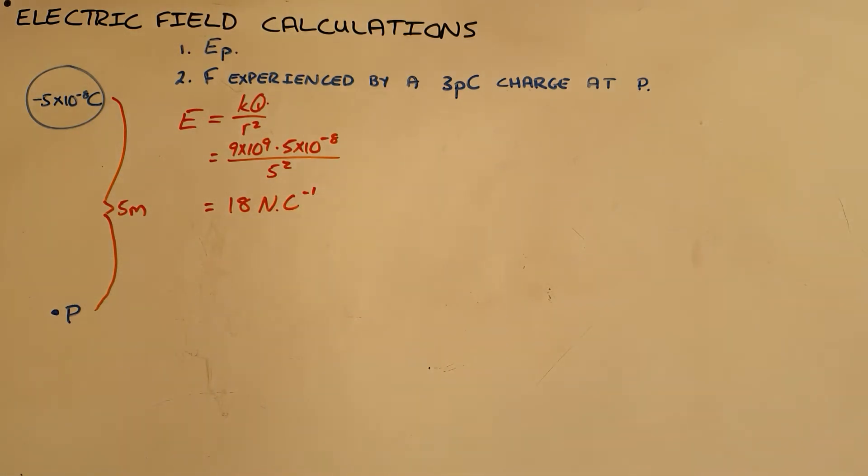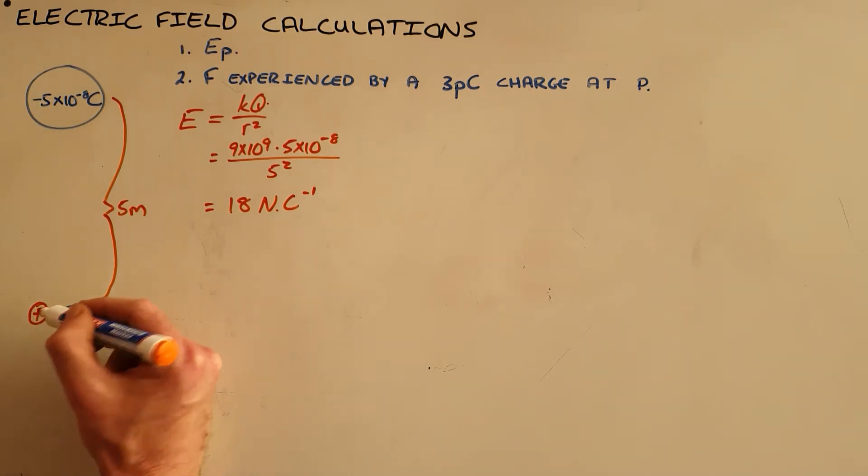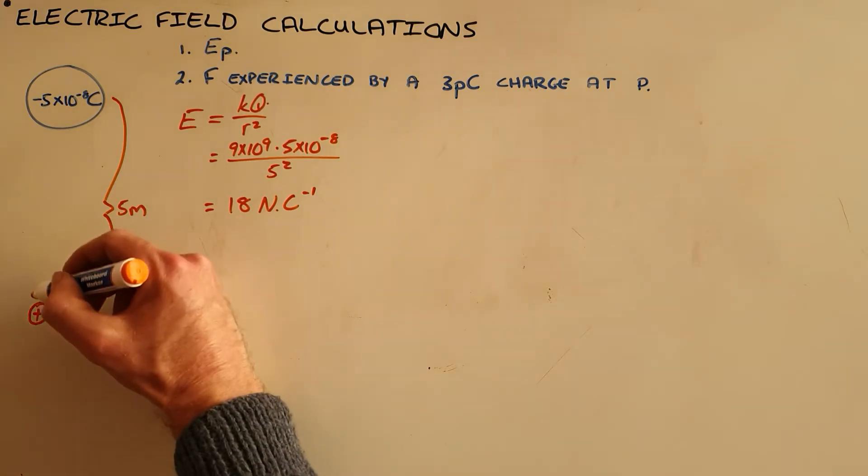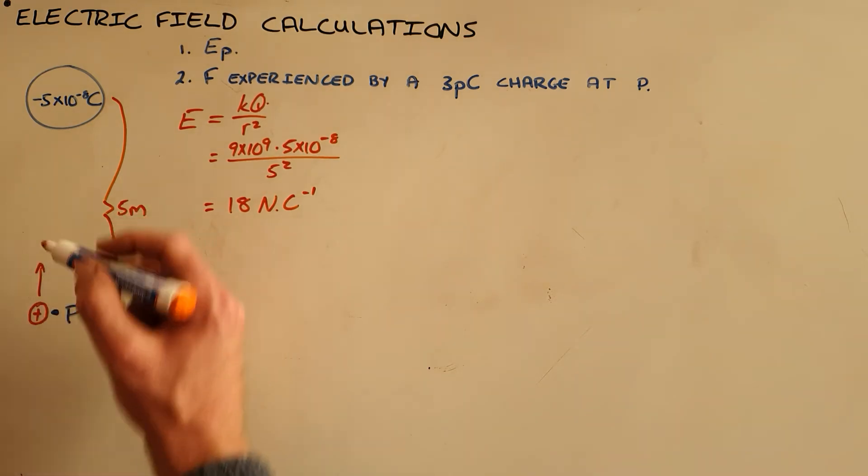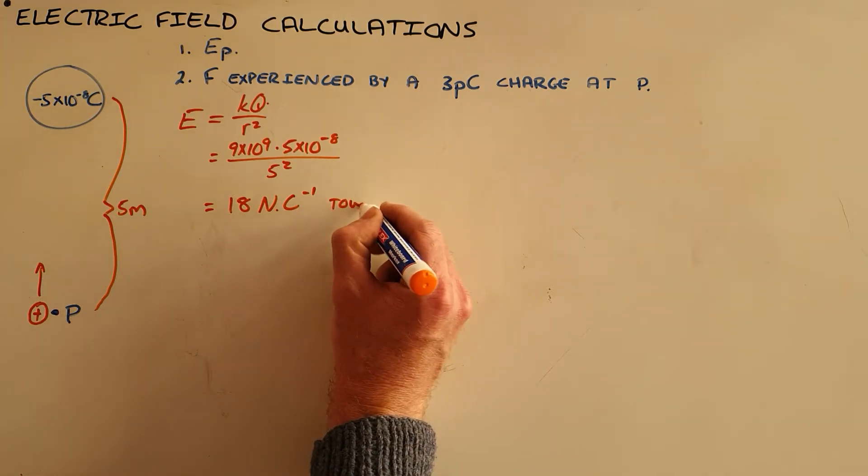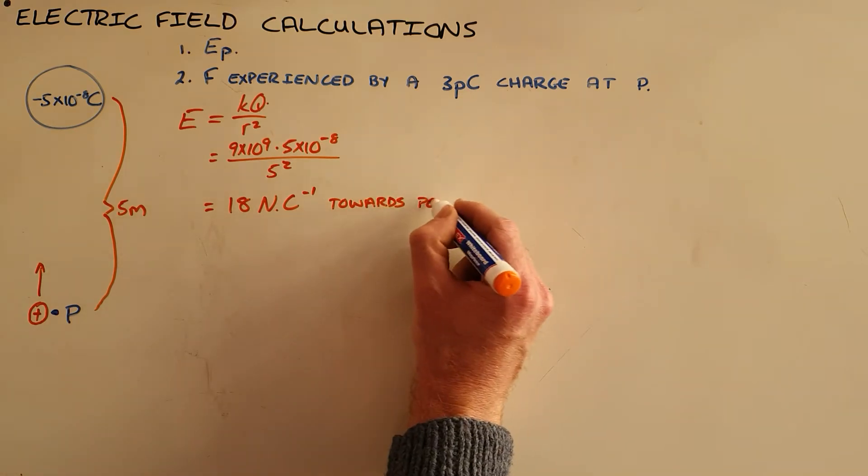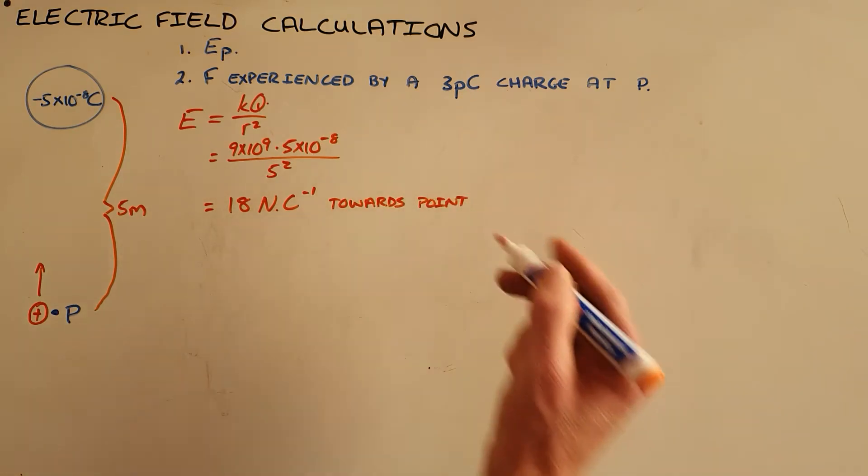And what's important here is being able to define the direction. And we know that electric field direction is always defined as the direction in which a positive test charge would move if placed at this point. And we can see here that a positive test charge would very clearly be attracted towards this charge, and so we say that the direction of this field is towards the point charge, or the charge if it was given a name, point A, etc.